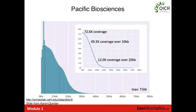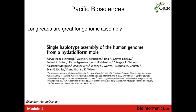This is a histogram of the read length distribution for a PacBio run for a breast cancer cell line sequenced here at OICR in collaboration with Cold Spring Harbor. We see that there are many reads greater than 10,000 bases, even greater than 20,000 bases, with the longest read in this dataset around 70,000 bases, which allows you to resolve a lot of these repetitive regions that aren't accessible by Illumina sequencing.